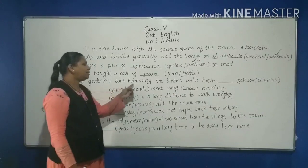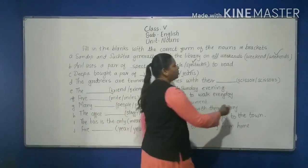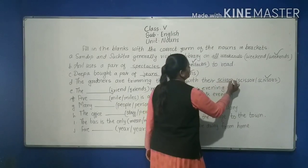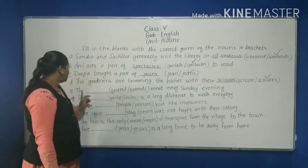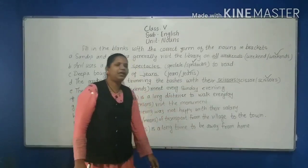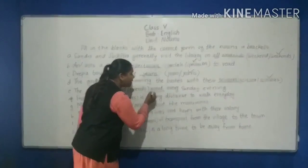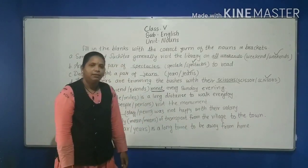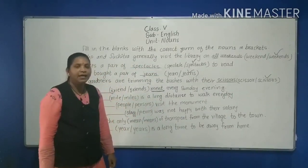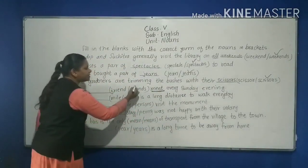Next: 'The gardeners are trimming the bushes with their ___.' Scissors come in a pair, so we choose 'scissors'. Then: 'The ___ meet every Sunday evening.' The verb is 'meet' — if it were one person, it would be 'meets'. Since the verb is 'meet', there are many, so we choose 'friends'.